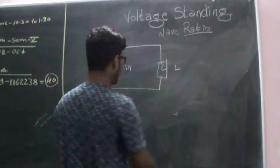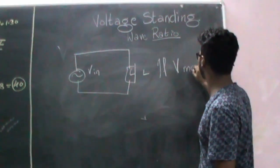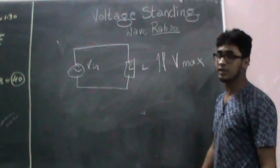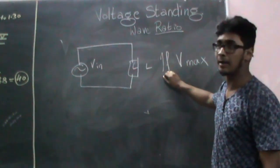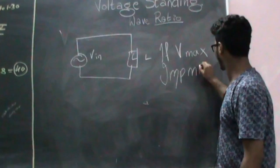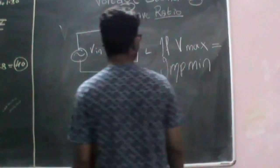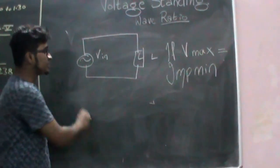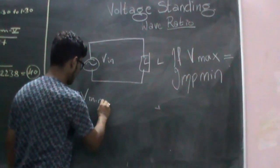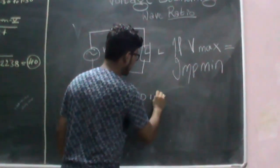In this case, if voltage is max, then obviously impedance would be minimum. And vice versa, if the voltage is minimum, then impedance would be maximum.